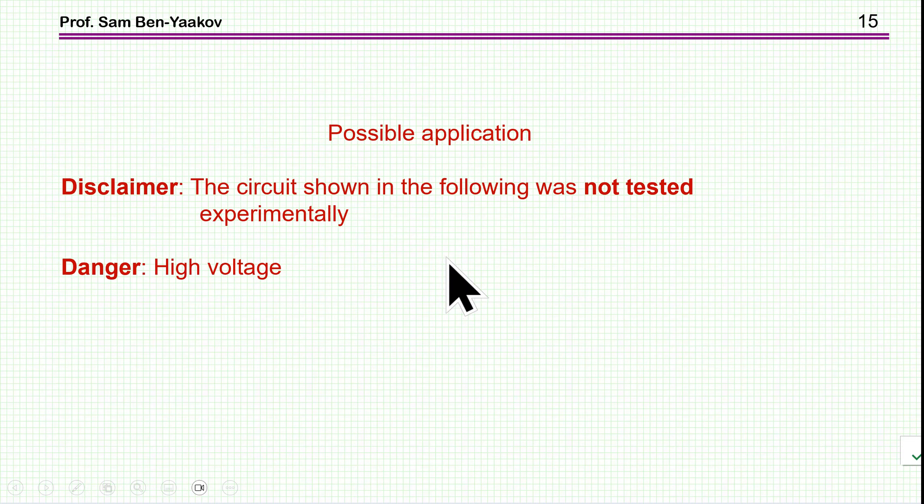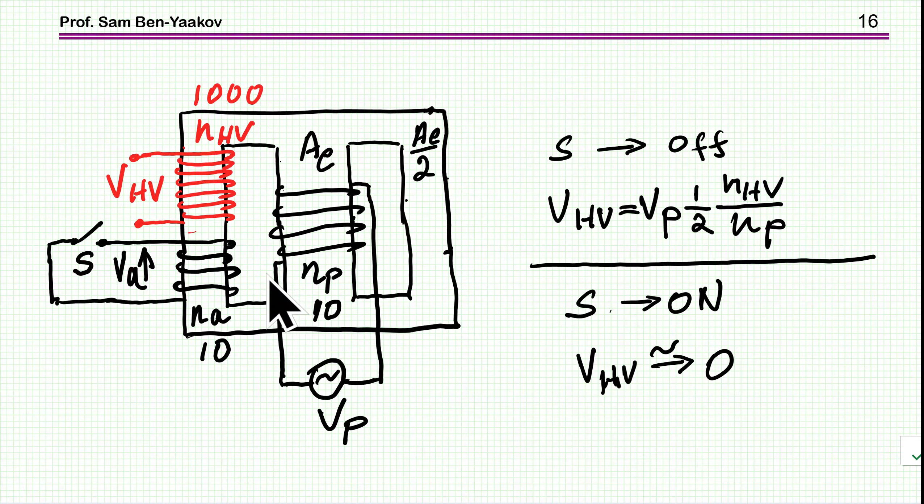For example, leakage inductances, things like that. And also, this application involves high voltage. So one has to be careful about it if you're going to try it experimentally. So here is the application I'm talking about. In this case, we have this structure, as I showed before. But then we have another winding here, which is a step up. That is, in this case, we have 10 turns for each of the excitation and the auxiliary.